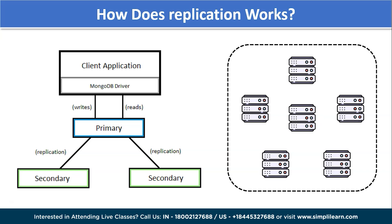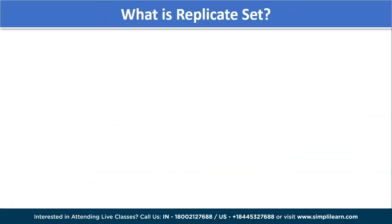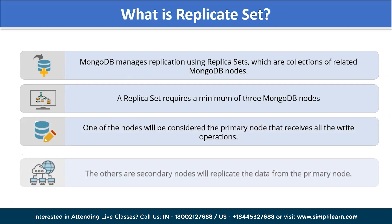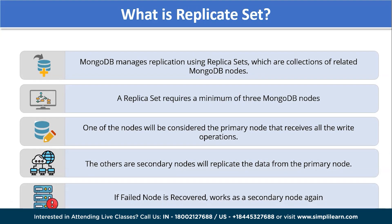MongoDB manages replication using replica sets, which are collections of related MongoDB nodes. A replica set requires a minimum of three MongoDB nodes. One should be designated as the primary node that receives all write operations; the remaining ones are secondary nodes that replicate data from the primary node. If there is a failure at any node level, and the failed node is recovered, it works as a secondary node again — not as a primary node.